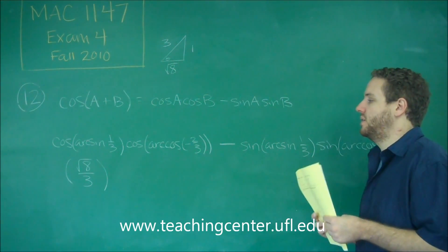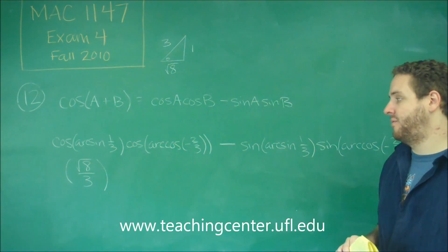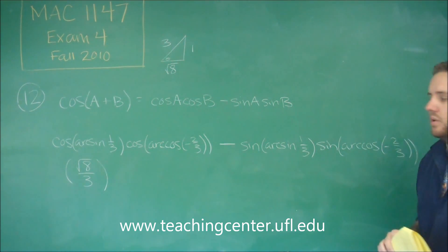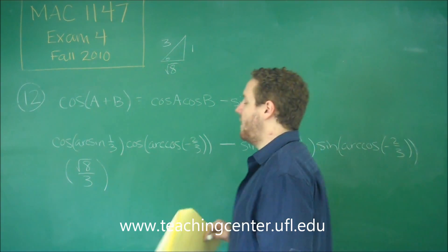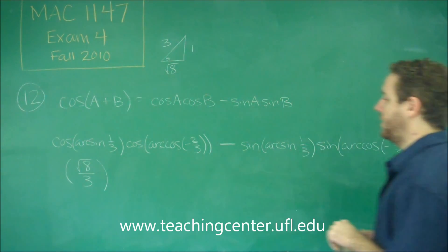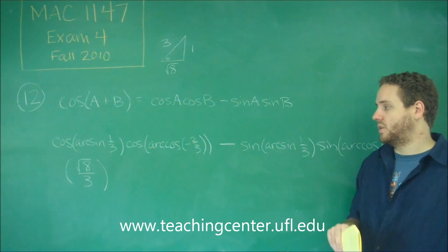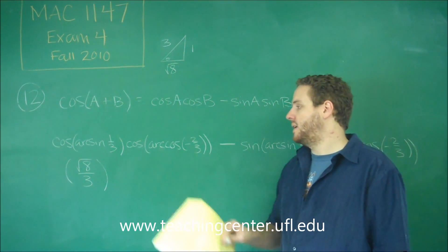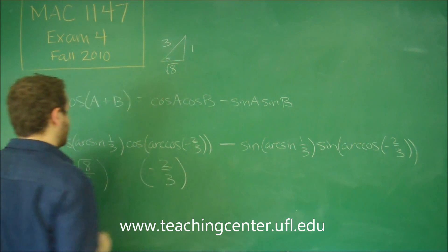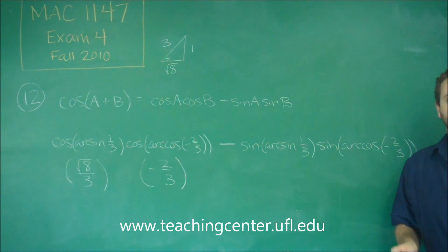The next thing we have to do is cosine of arc cosine of negative two-thirds. Remember that would be fine if our value was in the correct order. Arc cosine of negative two-thirds, that's fine because the domain of arc cosine is negative one to one. It can only output a value in the range zero to pi, and since it's negative, it would go in the second quadrant because that's where cosine is negative. Then we take the cosine of that, we're going to get the exact same thing back. So that one is fine, negative two-thirds.